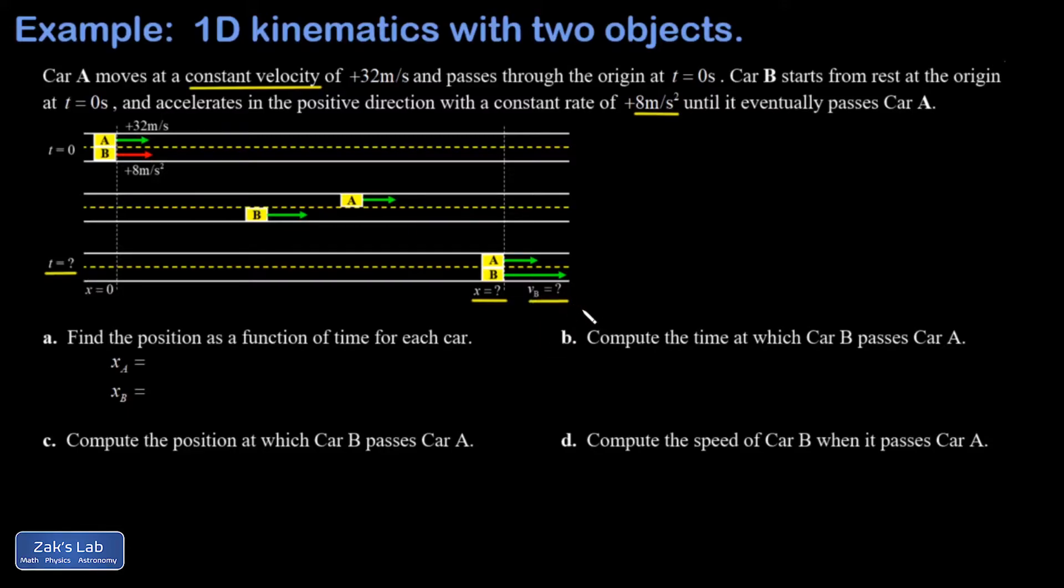The first step in a problem like this is to mathematically describe the position of each car as a function of time. This goes back to our standard kinematics equations. Our first fundamental kinematics equation is x equals x naught plus v naught t plus one half a t squared. Each of these cars has a constant acceleration, so they each obey an equation like this describing their position as a function of time. For part D we're going to need the second fundamental kinematics equation, so I may as well write it down right now: v equals v naught plus a t.